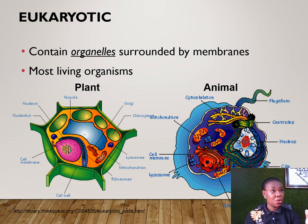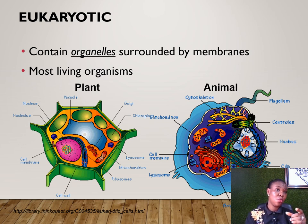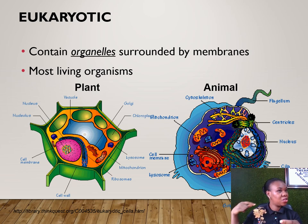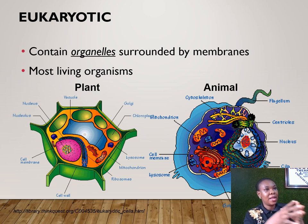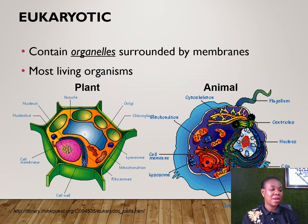For example, in the renal system, you have the kidneys, the ureters, the bladder, and so on. In the gastrointestinal system, you start from the minute cells of the intestine, which come together to form a tissue, then form an organ — the appendix, for instance, is part of the intestine and is an organ. All these organs combine to give you the gastrointestinal system.